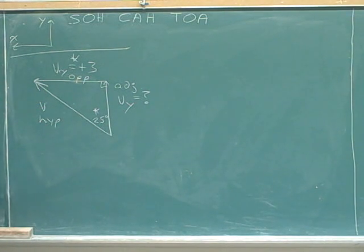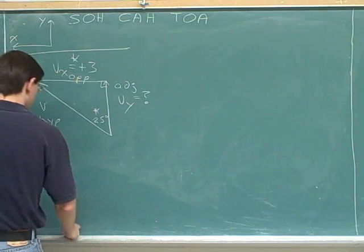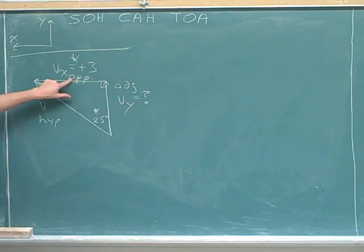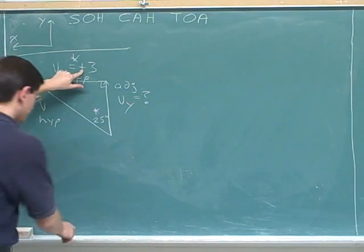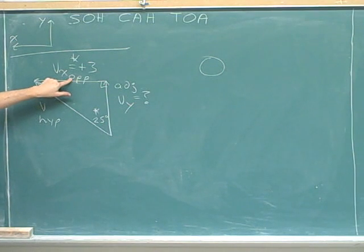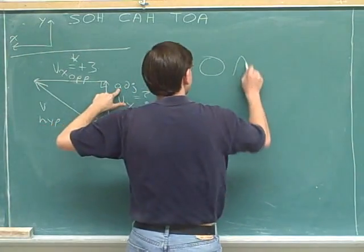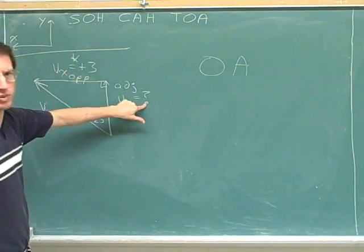So which sides do we need to be using? Well, we need to be using this opposite side because that's what we know the number about. We need a trig function that refers to the opposite side because that's what we know the number about. And we need a trig function that refers to the adjacent side because that's what the question was about.